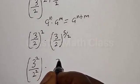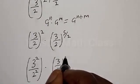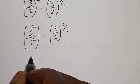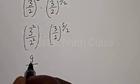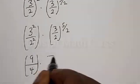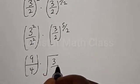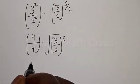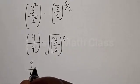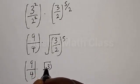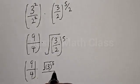Applying this rule, we get 3 over 2 squared, multiplied by 3 over 2 raised to the power 5 over 2. Now, 3 squared is 9 and 2 squared is 4. The term 3 over 2 raised to the power 5 over 2 can be written as the square root of 3 over 2, all raised to the power 5.